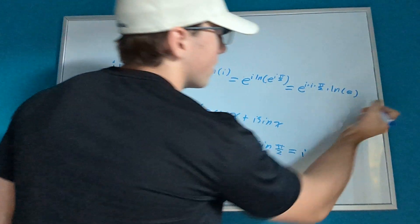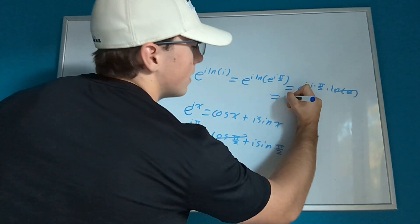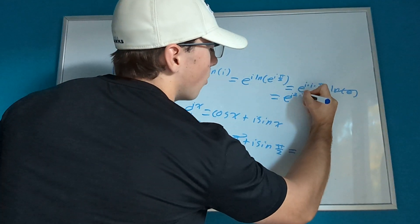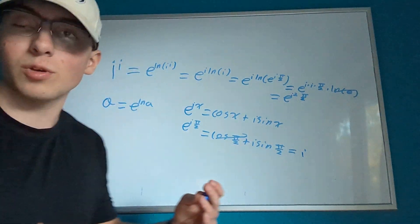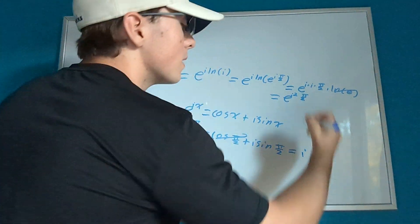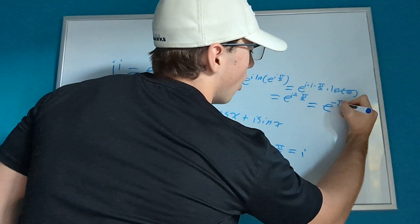Times natural log of e. Well, natural log of e is 1, so that goes away. And then we get e to the i squared times pi over 2. Since i squared is negative 1, our final answer is e to the negative pi over 2.